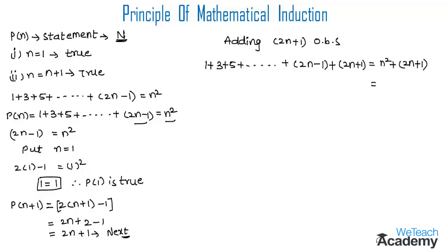Coming to the RHS, we observe that n² + 2n + 1 is in the form a² + 2ab + b², which equals (a + b)². Therefore, the RHS equals (n + 1)².